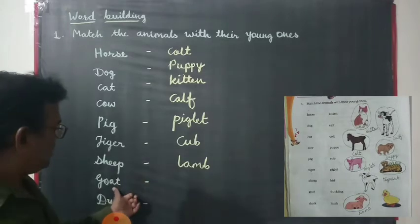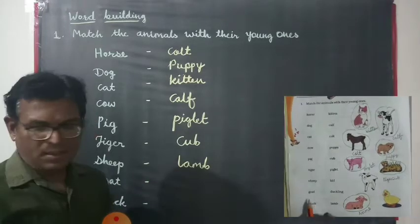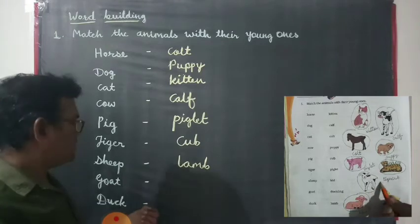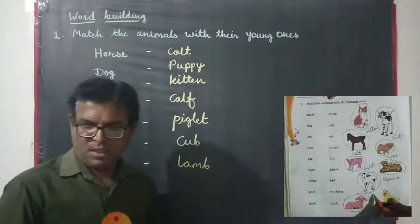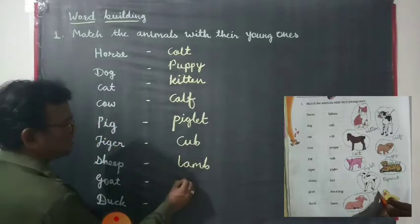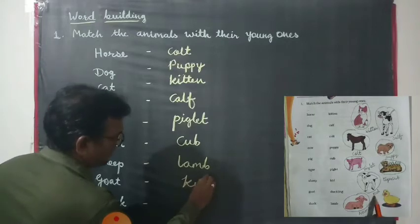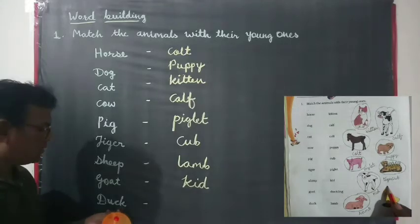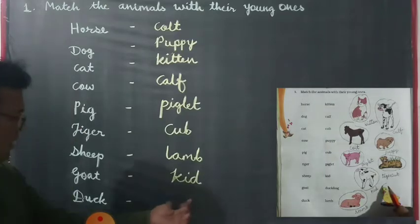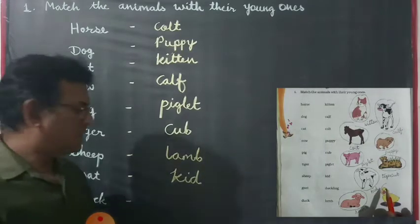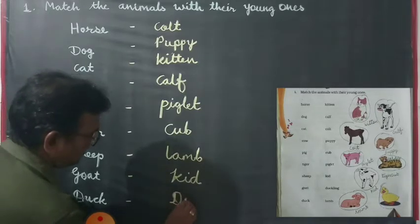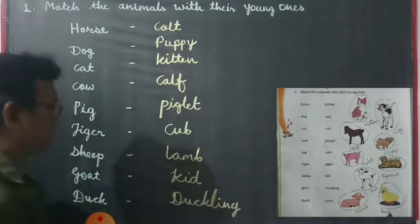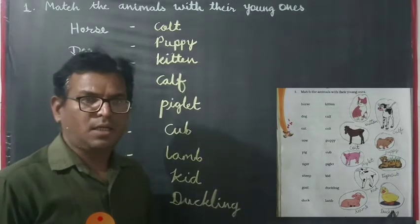And what is called the young ones of goat? Yes, find out, my dear — what is called the young ones of goat? Yes, it is called a kid — K-I-D. Now, at last, the young ones of duck — what is called the young ones of duck? Yes, duckling. Duck's young one is called duckling.